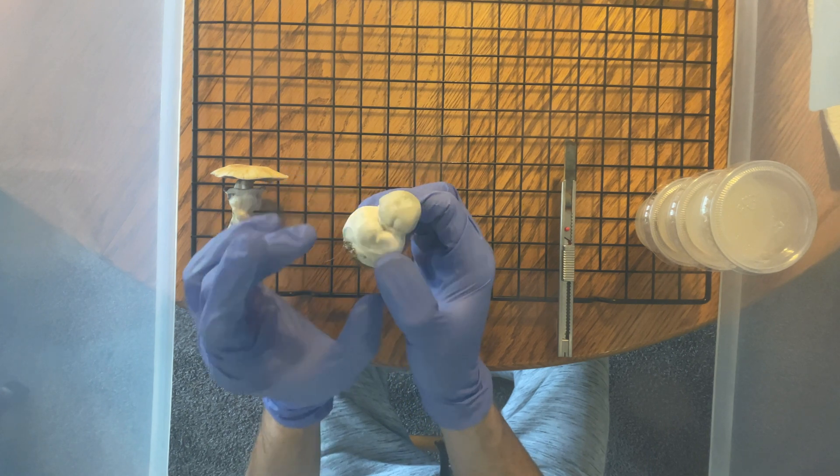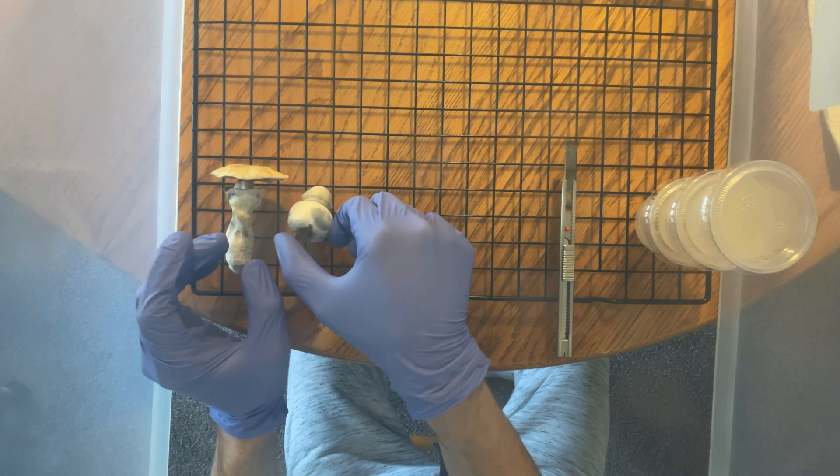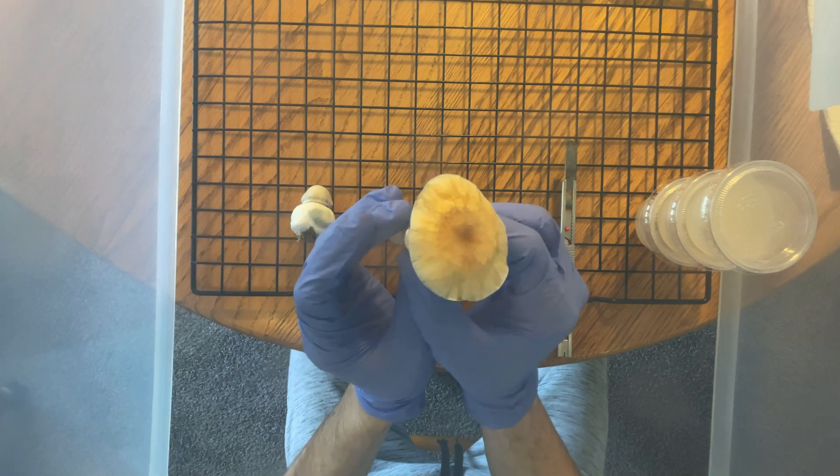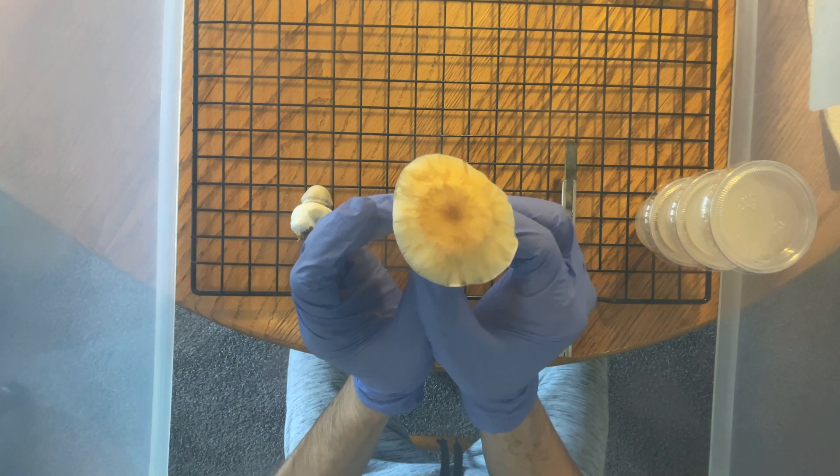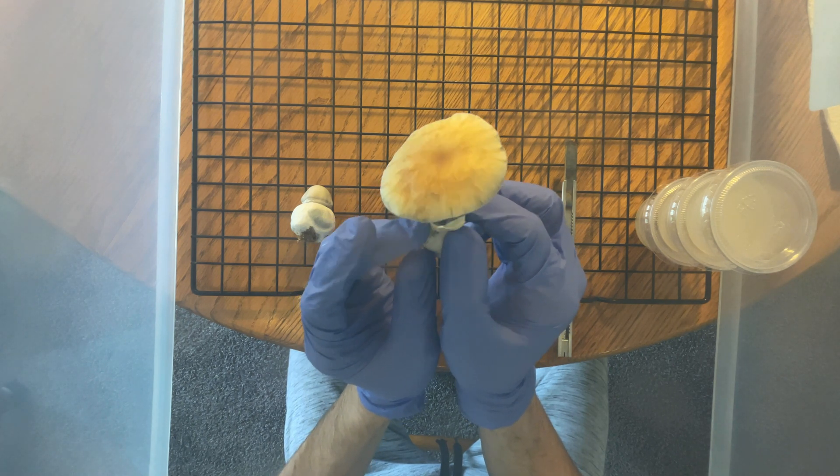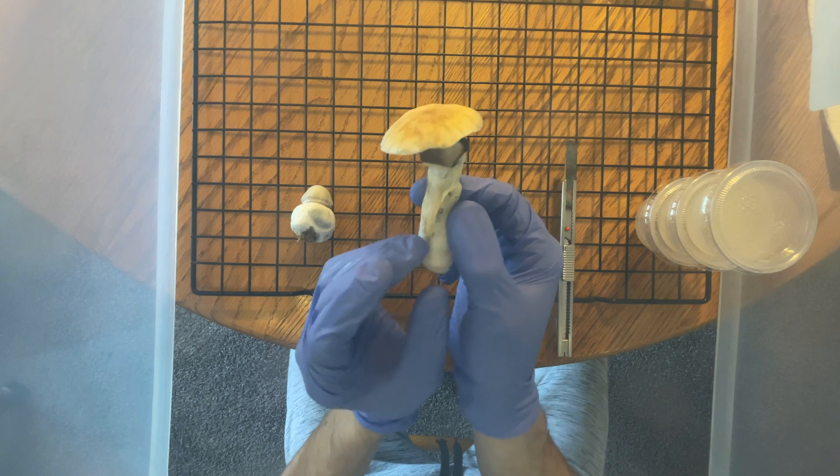In today's video, we will be cloning two different fruits, one that ended up squatting out on me and is really dense. The other fruit has some lighter pigments on the cap than the rest of the flush, so I decided to see if that's a trait that would be carried into future bins.